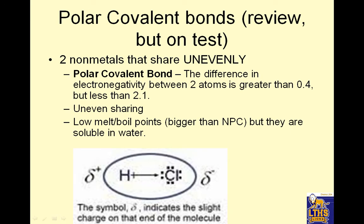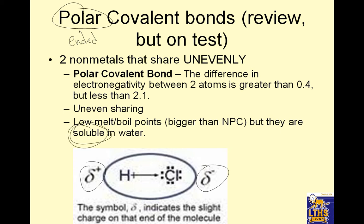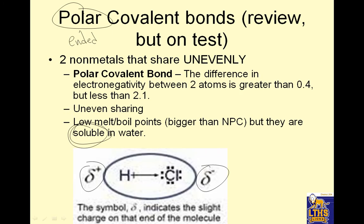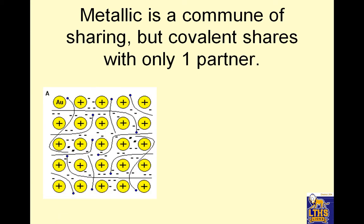Polar covalent — again it's a review but it's on the test. Two nonmetals that share unevenly. The word polar means ended, so there's a negative end and a positive end. The difference in electronegativity between two atoms is greater than 0.4 but less than 2.1. They have low melting and boiling points, but bigger than nonpolar covalent, and they're soluble in water — that's the big difference between polar and nonpolar. Metallic is a commune of sharing, but covalent shares with only one partner, like H sharing with Cl.